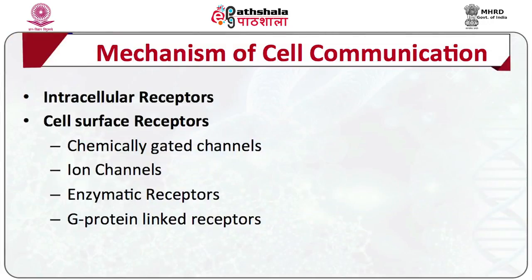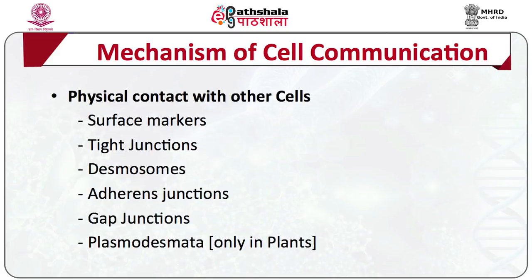For communication, there are intracellular receptors and cell surface receptors, which include chemically gated channels, ion channels, enzymatic receptors, and G protein linked receptors. Physical contact between cells includes cell surface junctions: desmosomes, adherent junctions, communicating junctions like gap junctions, and plasmodesmata — which are present only in plants.